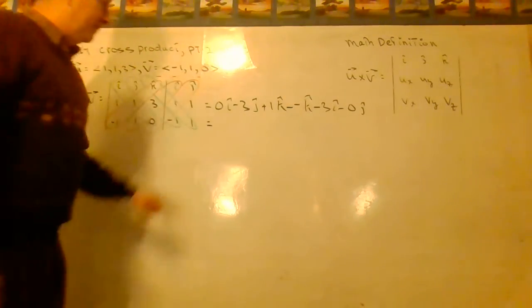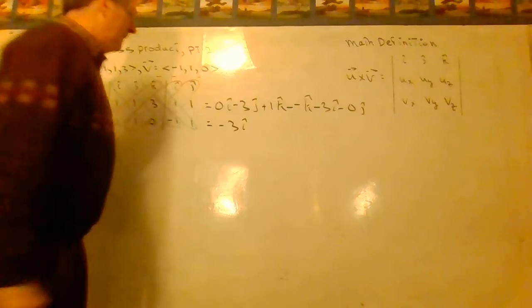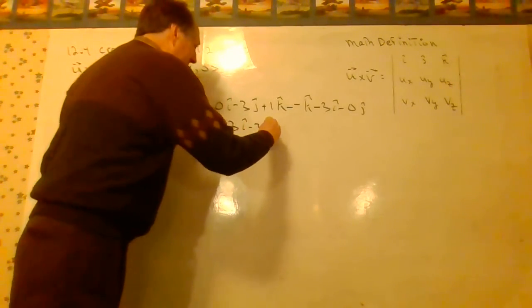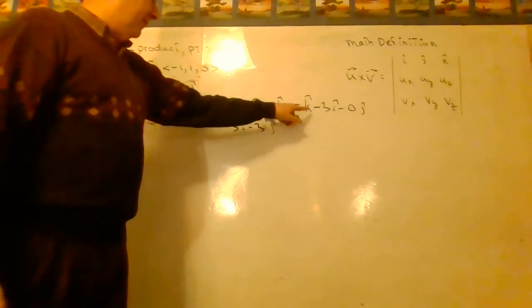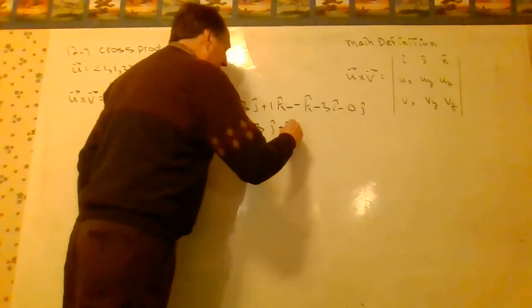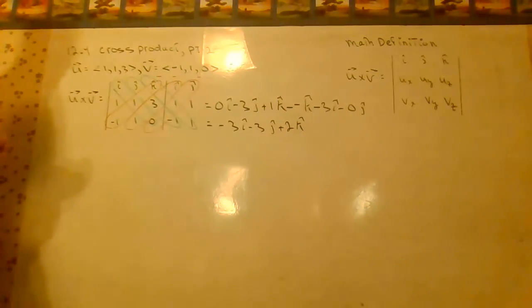And we can simplify. 0 I minus 3 I. And negative 3 J. That one's 0. And then 1 K minus plus K. 1 K plus K is plus 2 K. And that's the cross product.